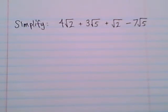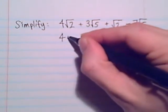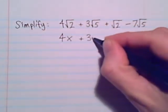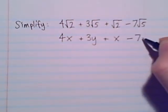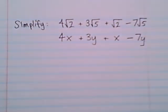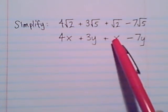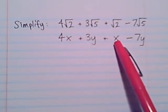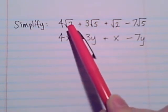So simplify means are each of our radicals simplified, but also we might have some like terms to combine. So when it comes to radicals, the idea of like terms is very similar to just working with polynomials, with variables.